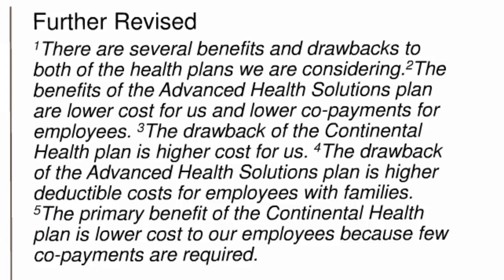To make this paragraph more unified, the writer should group the sentences more logically — organizing either by the plan, AHS or CH, or by analysis, pros or cons. The ideal would be to combine these two groupings, so that the details in this paragraph would appear as follows: sentence 2, pro for AHS, followed by sentence 4, con for AHS; then sentence 5, pro for CH; and finally sentence 3, con for CH.